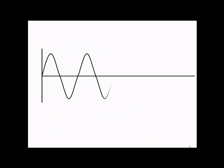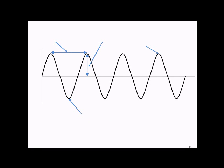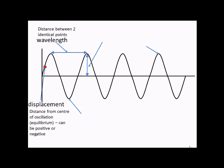Wave properties then. So there are a couple of key points we have to know about. The wavelength, which is the distance between two identical points. The displacement, which is the distance from the centre of oscillation. We've got the amplitude, which is the maximum displacement, or the height of a peak.